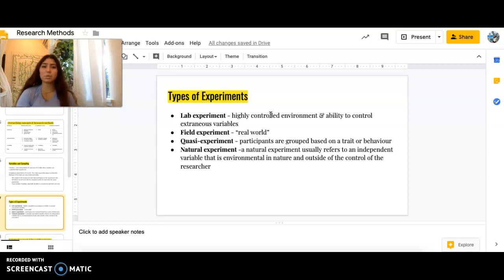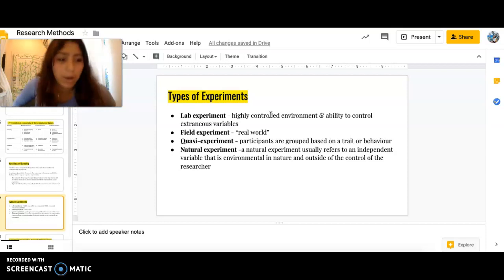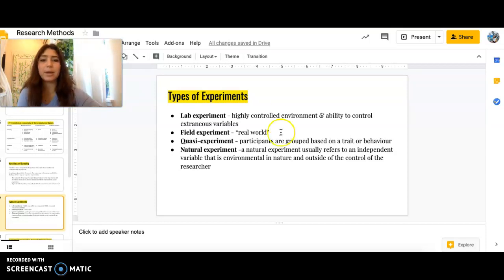Types of experience. So, there's lab experiments, which are highly controlled. And usually there's an ability to control these extraneous variables that you might not be able to do in a field experiment. Because field experiments are usually more naturalistic. But some downsides of them is that they're very difficult to control extraneous variables. But also, they're difficult to replicate. But they do usually suggest findings that are more applicable to real world. So that's an advantage of that.